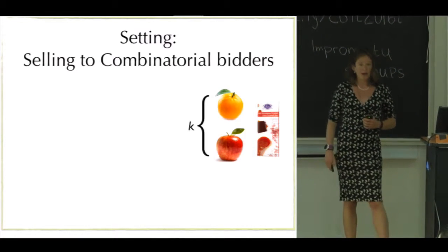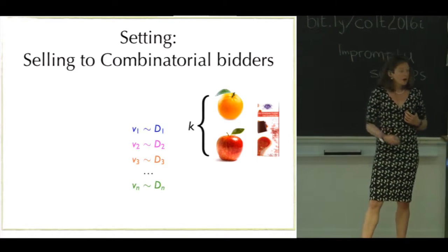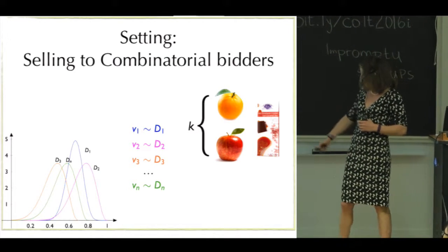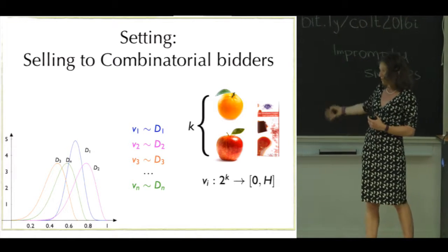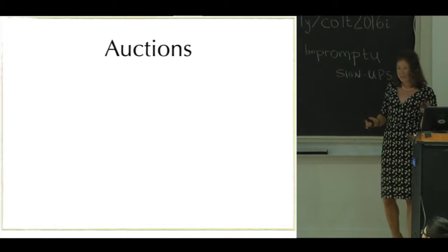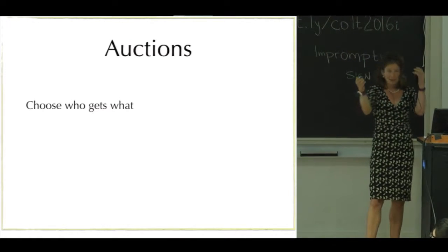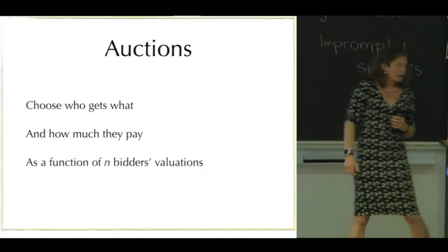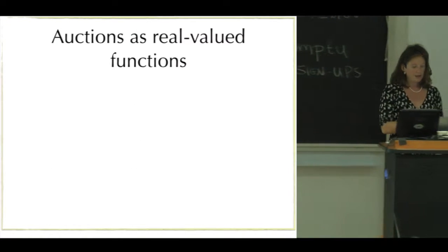The setting I want to think about today is similar to the one that Ellen just described. We're going to imagine that there are k heterogeneous items and n buyers drawn from some distributions. I want to think about each buyer having some valuation function which maps subsets of those items to real numbers, which you can think of as the value that those buyers get for those items. An auction broadly speaking essentially decides who gets what based on a set of one valuation for each buyer, and how much each person pays.